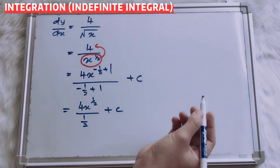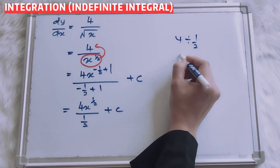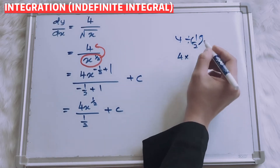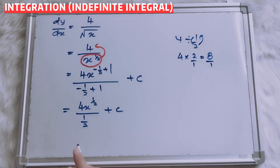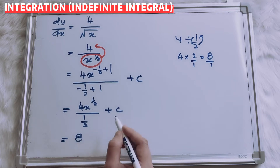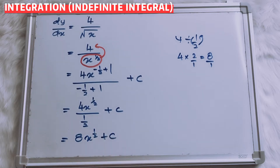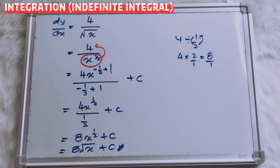Okay, how to solve? 4 divided by 1 over 2 — when you change to multiply, you switch the place. So 2 over 1, that means 8. Your answer will be 8x to the power of 1 over 2, plus C. You can also write your answer as 8 times square root x, plus C.